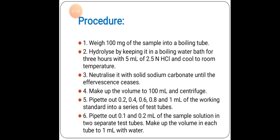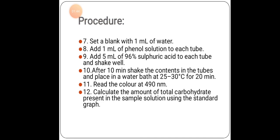Pipette out 0.2, 0.4, 0.6, 0.8 and 1 ml of the working standard into a series of test tubes. Pipette out 0.1 and 0.2 ml of the sample solution into separate test tubes. Make up the volume in each tube to 1 ml with water. Set a blank with 1 ml of water.